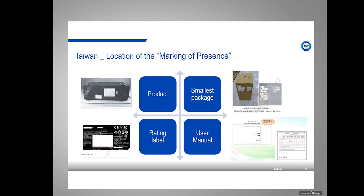In addition to that labeling, you also need to place a marking of presence on the product, in the user manual, or on the label. This marking of presence is a grid where you indicate any concentrations over the limit for any of the six substances. This grid is only required if you have an excess amount; if you don't have any excess, the grid only needs to be in the user manual. If you do have an excess, it should be placed in one of these locations — that's up to the manufacturer.